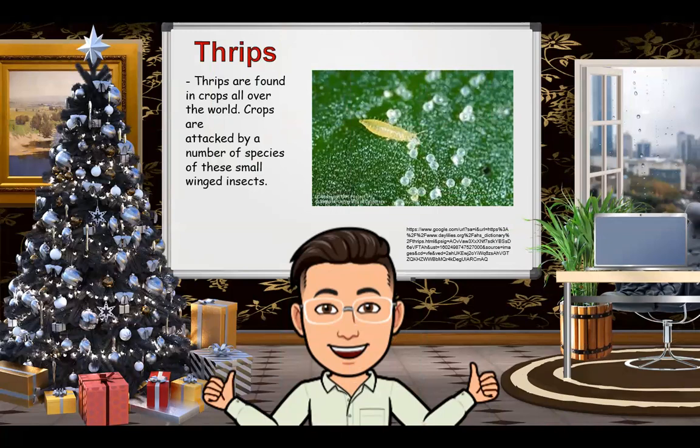The next garden pest is thrips. Thrips are found in crops all over the world and crops are attacked by a number of species of these small winged insects. Larvae and adult insects feed on all above-ground parts of the plant. As a result, the tissue dies, loss of chlorophyll reduces yield, and serious attacks may result in desiccation of leaves and damage to flowers and fruits. Thrips can also transmit plant diseases. The damage thrips do is usually spotted before the thrips are noticed — damage appears as small yellow speckles on the leaves, later followed by a silvery sheen on leaf surfaces. The thrips feed by scraping the tender leaves, with most damage occurring on new growth. They are only 1–1.2 cm long but can move very quickly. Adults look similar to a small worm with wings.